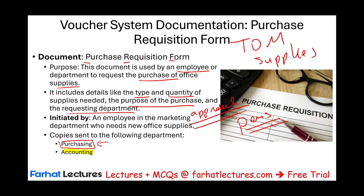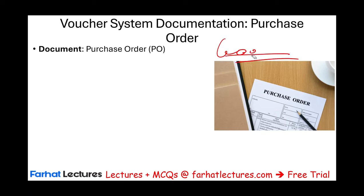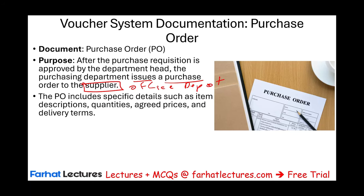The purchasing department will then prepare a purchase order. For any of these documents, if you want to see a real-world example, you can Google them. After the purchase requisition is approved, the purchasing department issues a purchase order to the supplier — let's say Office Depot — specifying item description, quantities, agreed prices, and delivery terms. In our example, we're ordering 100 marketing pens.